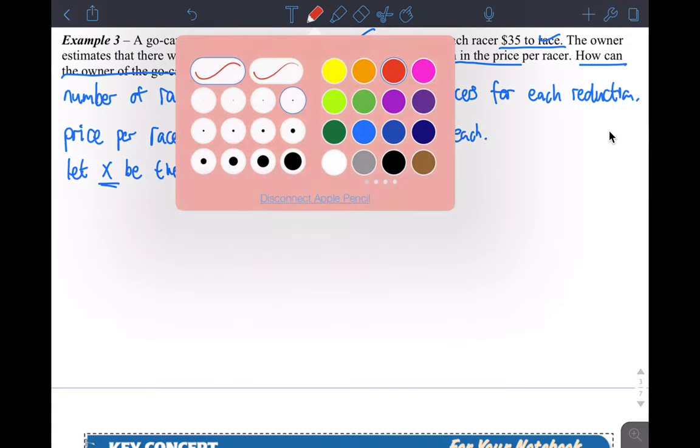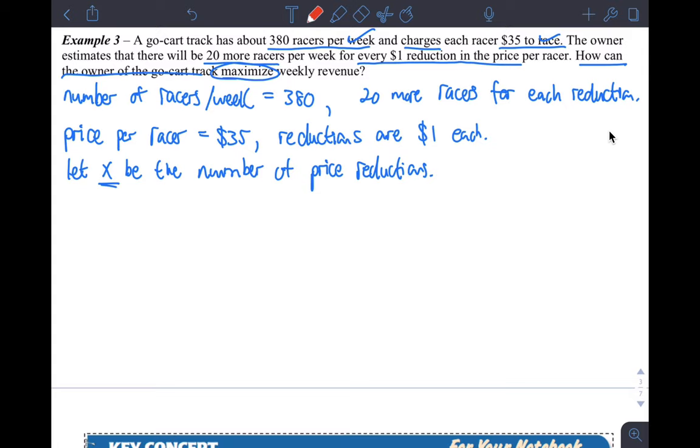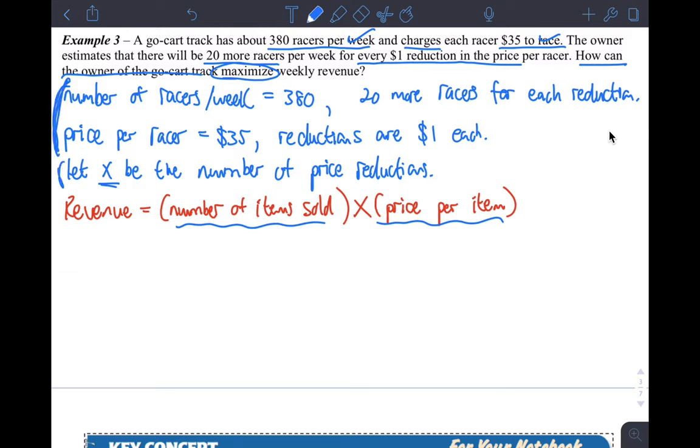Now we can actually start writing an equation. If you think about it, you can set up an equation and solve the problem. If you just go back to like basic things you learned in pre-algebra, revenue is basically the number of items sold times the price per item. That's basically revenue. So all we have to do is fill in those two things with all of the information we were given.